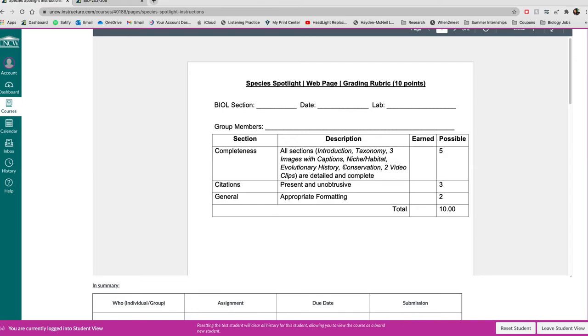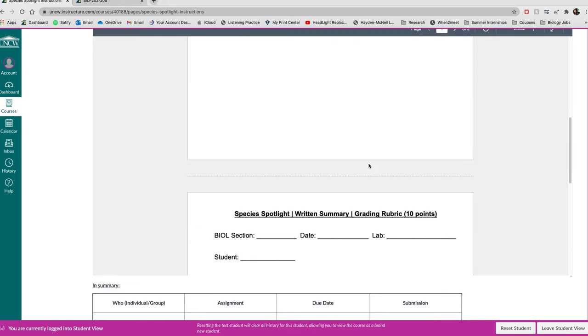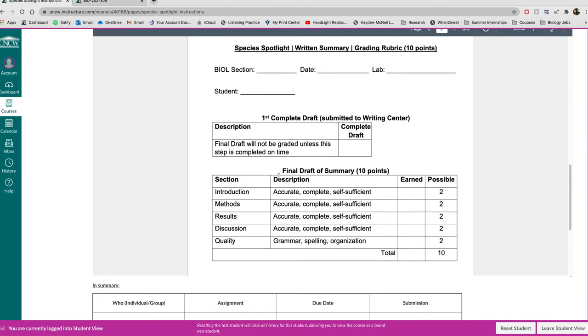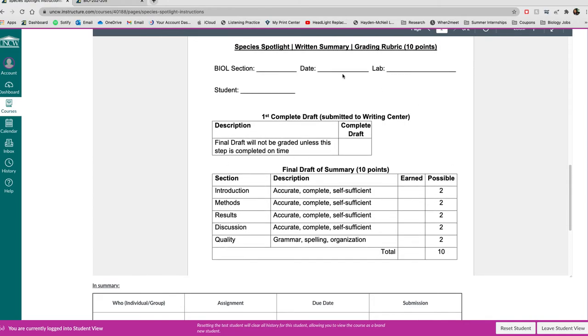A second person could focus on niche and habitat on its own or add a video. What I don't want is one person writing introduction, taxonomy and niche and habitat, and then another person just finding videos and images. That's just not fair to the group. For the paper, I want you to be able to summarize the introduction, methods, results, and discussion of the scientific paper that your group chose.